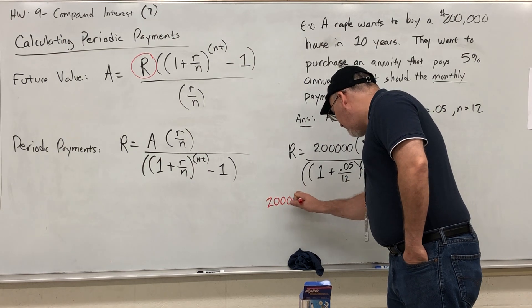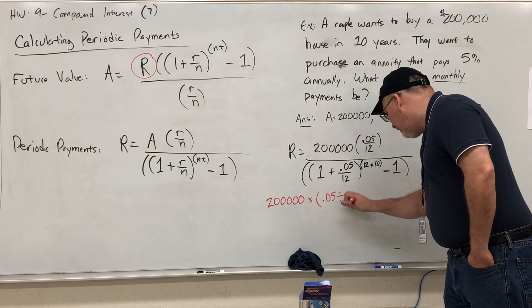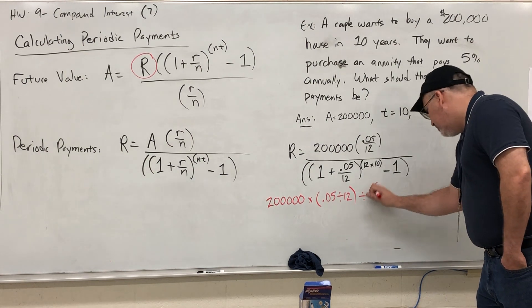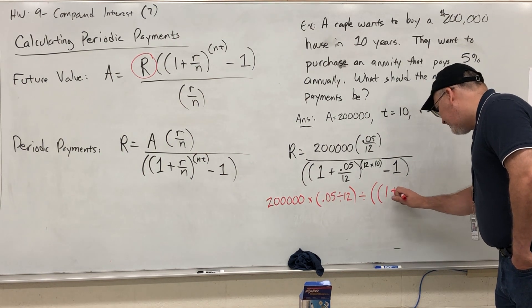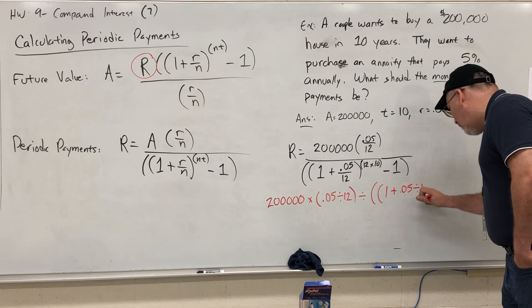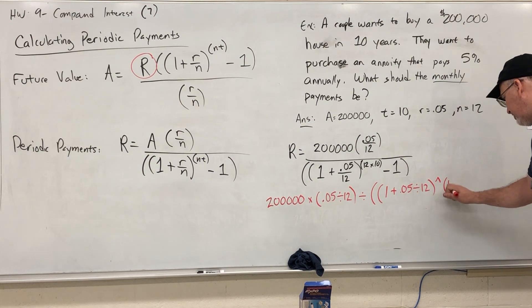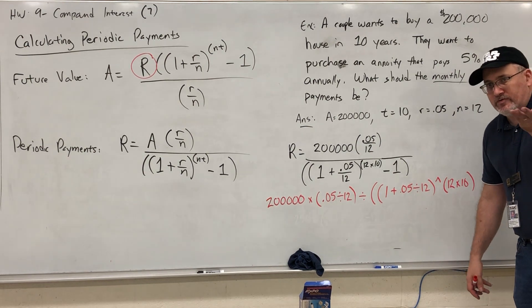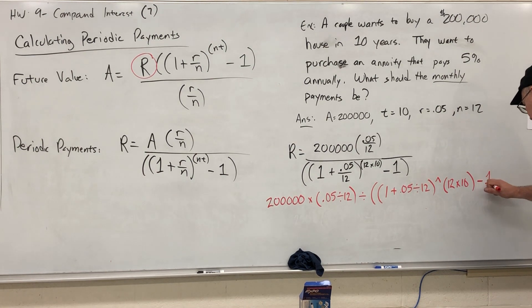200,000 times, open parenthesis, 0.05 divided by 12, close parenthesis, divided by, for the giant fraction bar, double open parenthesis—it is important to type both—1 plus 0.05 divided by 12, close parenthesis, press your exponent button, open parenthesis, 12 times 10, close parenthesis. Get out of the exponent. For those of you who have calculators with elevated exponents, minus one, close parenthesis, and don't forget to press equals.